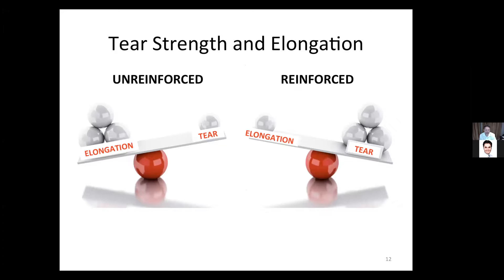These liners are available both in unreinforced and reinforced forms, where there's a scrim support in the middle of the liner. When you reinforce a liner, you improve tear resistance but at the expense of elongation, and vice versa. In an unreinforced liner — whether a polyolefin, vinyl liner, or rubber — if you use a scrim your tear resistance will improve, but your elongation will decrease to whatever the scrim permits, and the scrim won't have much elongation at all.